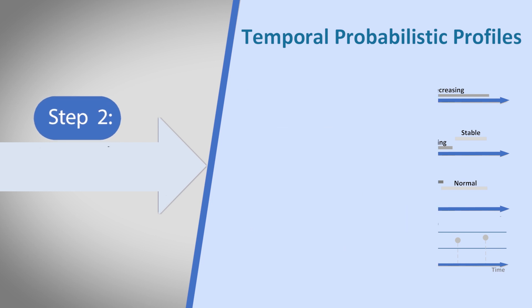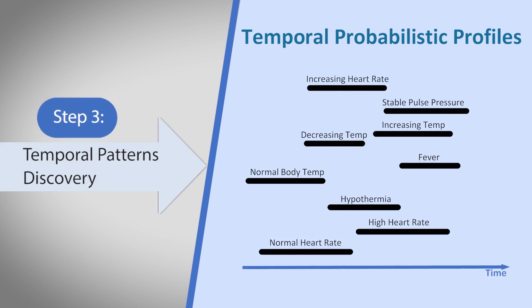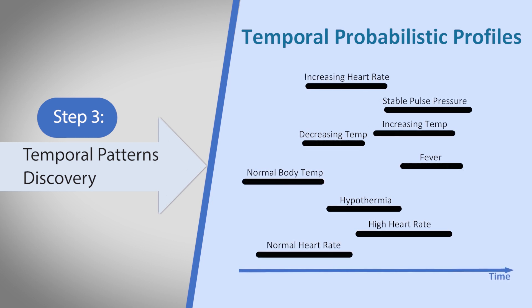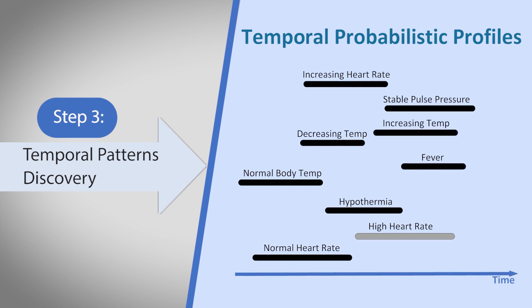A main characteristic of time-dependent processes is the existence of temporal patterns. Thus, in the method's third step, frequent relations between time intervals are identified in order to discover interval-based temporal patterns.